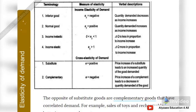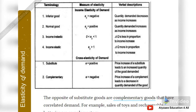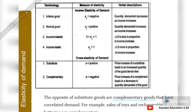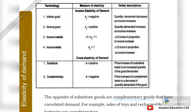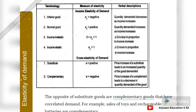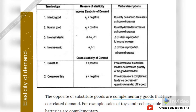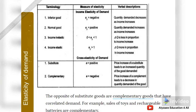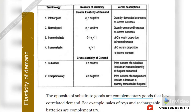For cross elasticity of demand, we discuss two things: substitutes and complementary goods. A price increase of a substitute leads to an increase in quantity demanded of a good — this is technically positive. Complementary goods are technically negative: a price increase of a complement leads to a decrease in the quantity demanded of a good.